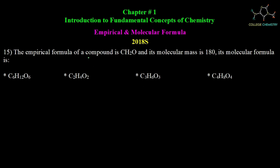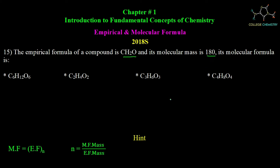The empirical formula of a compound is CH2O and its molecular mass is 180. The molecular formula is to be found from the 4 given options. The empirical formula is given, and n is not given. N is calculated as: molecular formula mass divided by empirical formula mass.